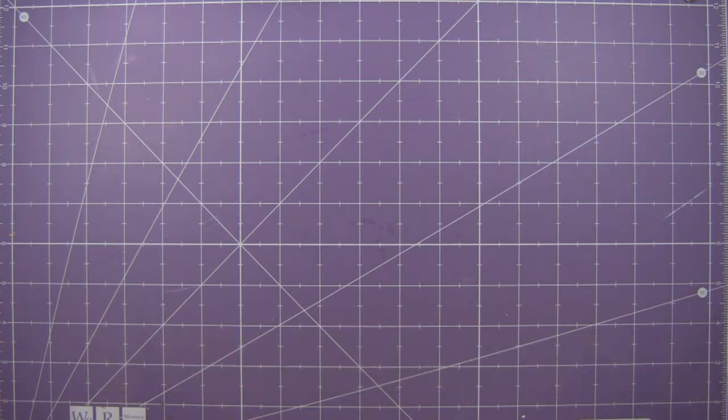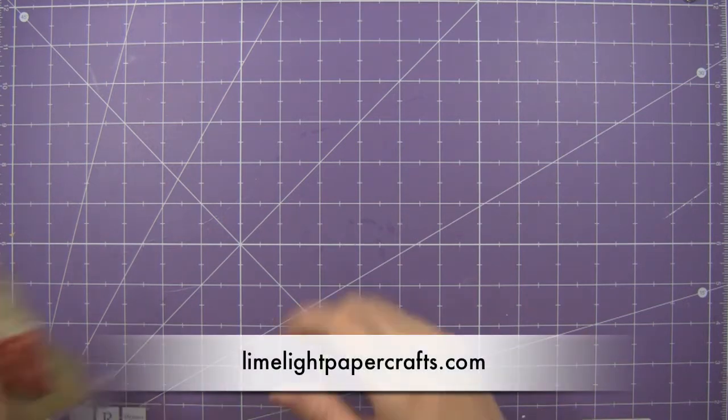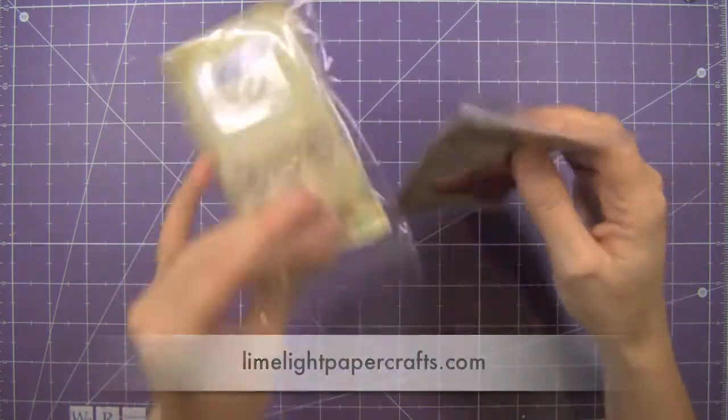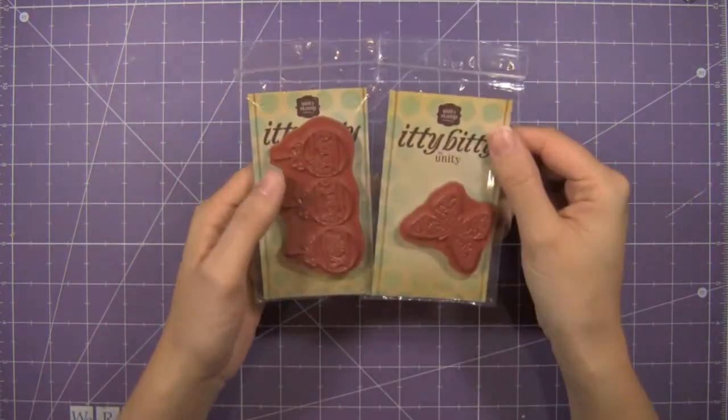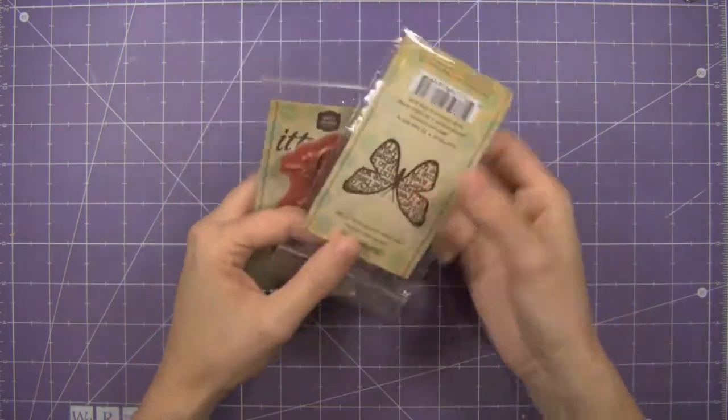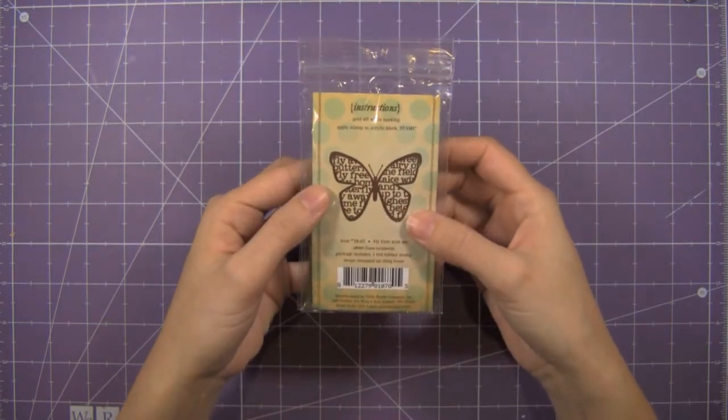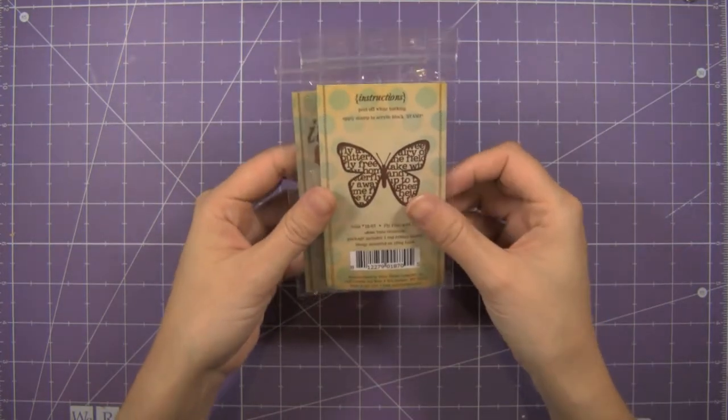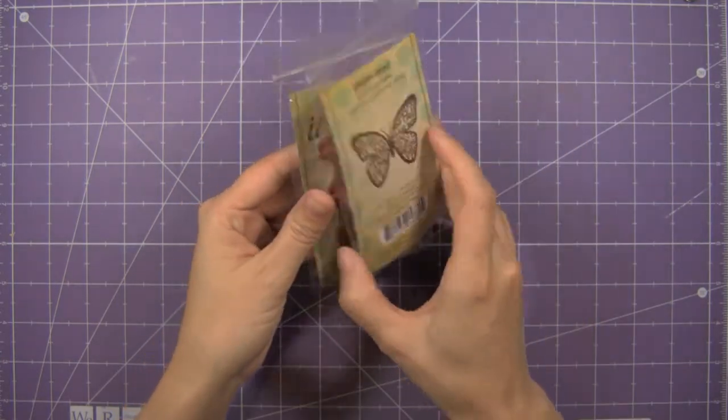So now let me show you the fun stuff that I got from Limelight Paper Crafts. Mandy has so much new stuff in. First, I wanted to show you, you all know my love for Itty Bitty and Unity, so I got two little itty bitties. The first one is this butterfly, which you've probably seen, I've already used.